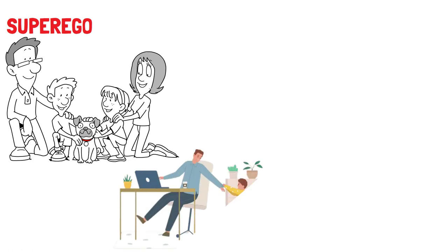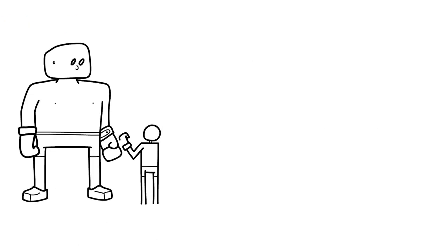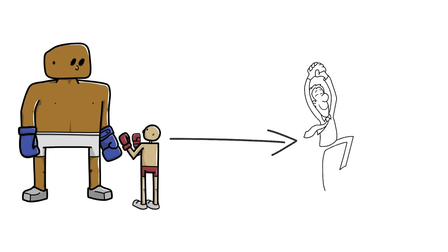The superego reminds you of the importance of family values and ethical considerations. It guides you to maintain a healthy work-life balance and avoid any actions that could harm your family relationships or compromise your moral principles. Dominance of either of the forces can lead to extremism. Let's see what will happen if one of these components becomes dominant.